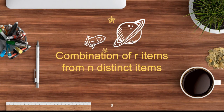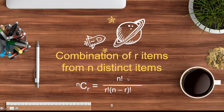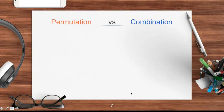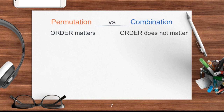Now for the formula: combination of r items from n distinct items is denoted by nCr, and the formula is n factorial divided by r factorial multiplied by n minus r factorial. So we've discussed both permutation and combination — what is the difference between the two?